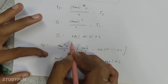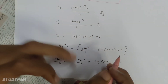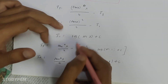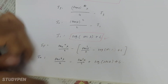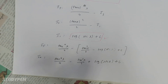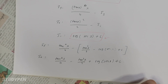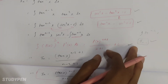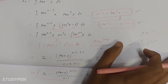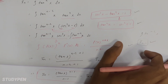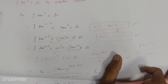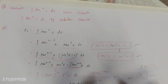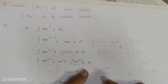Next, I1 is log of sec x plus c. You are calling it in this step. This is the formula. Now I am going to use the formula. I will check in the next video.